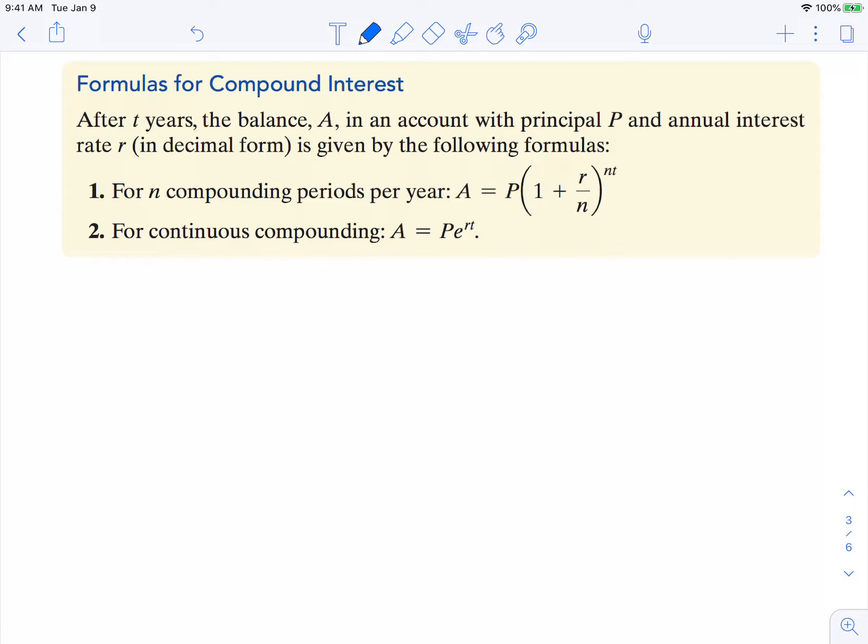We start off with A. A represents the balance in the account at the end of T years. The principal is your initial amount, and then your annual interest rate as a decimal will be your R.